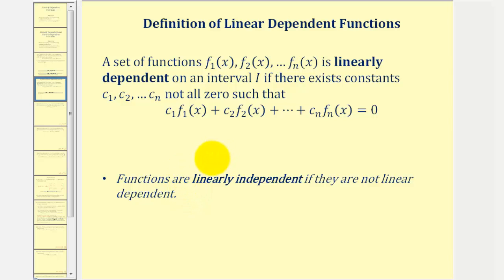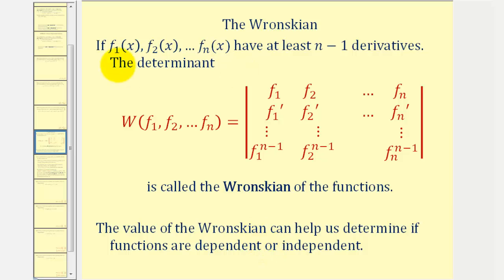In this video, we're going to focus on determining whether functions are linearly independent or dependent using a special determinant called the Wronskian. If we have functions f₁ through fₙ that have at least n minus one derivatives, then the determinant given here is called the Wronskian of the functions. The first row will be the original functions, the second row the first derivatives, the third row the second derivatives, all the way down to the (n−1)th derivative in the last row.